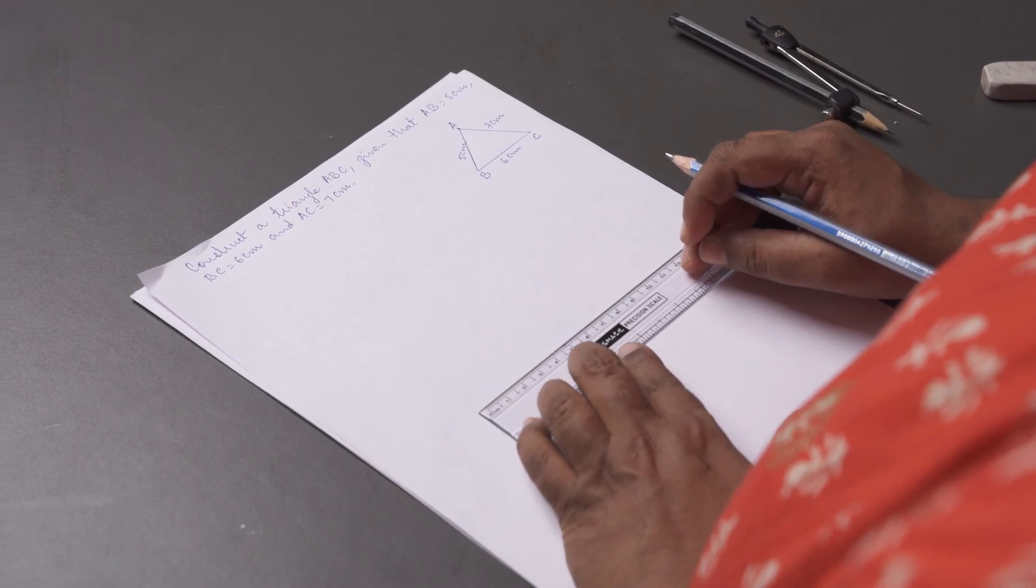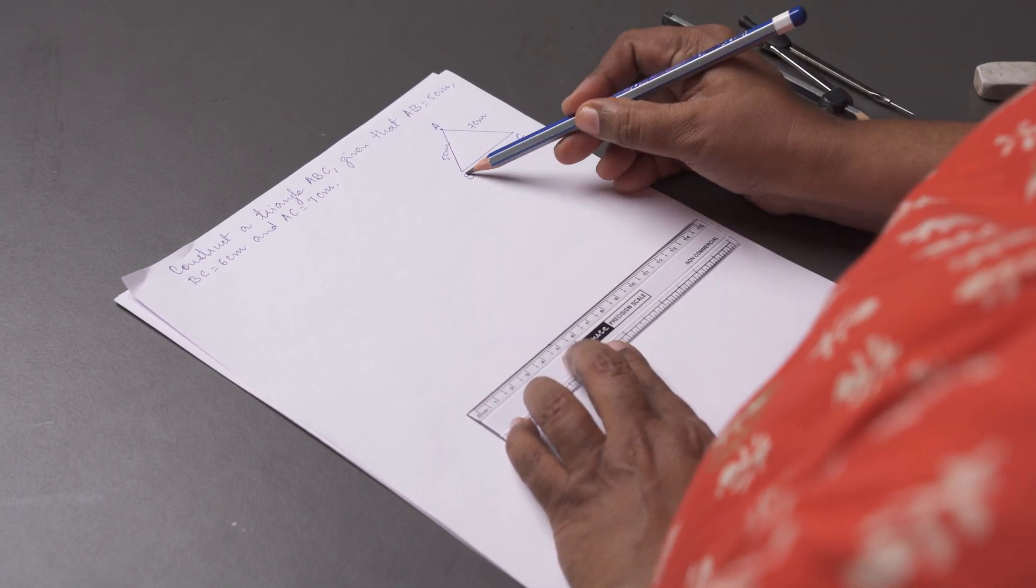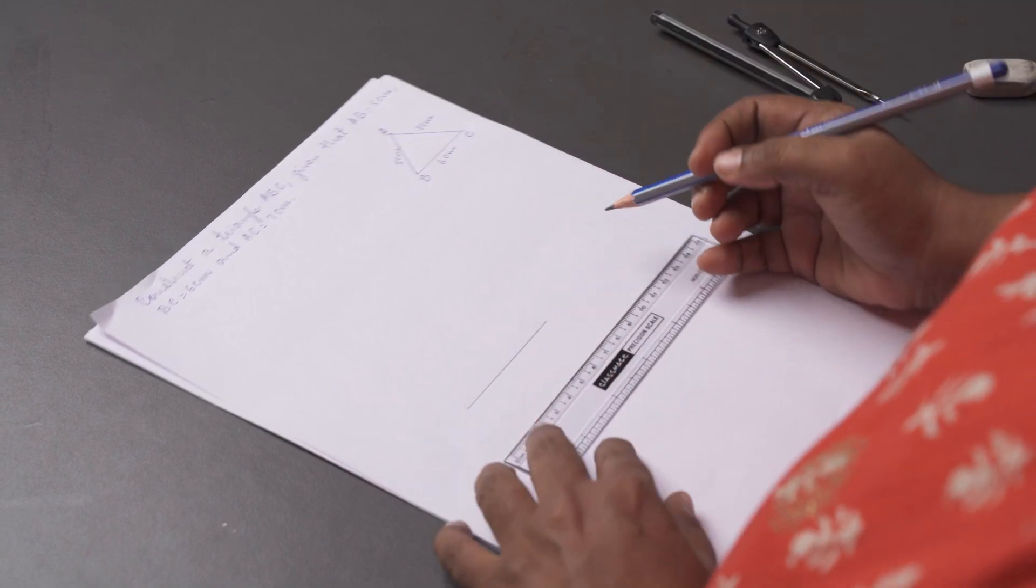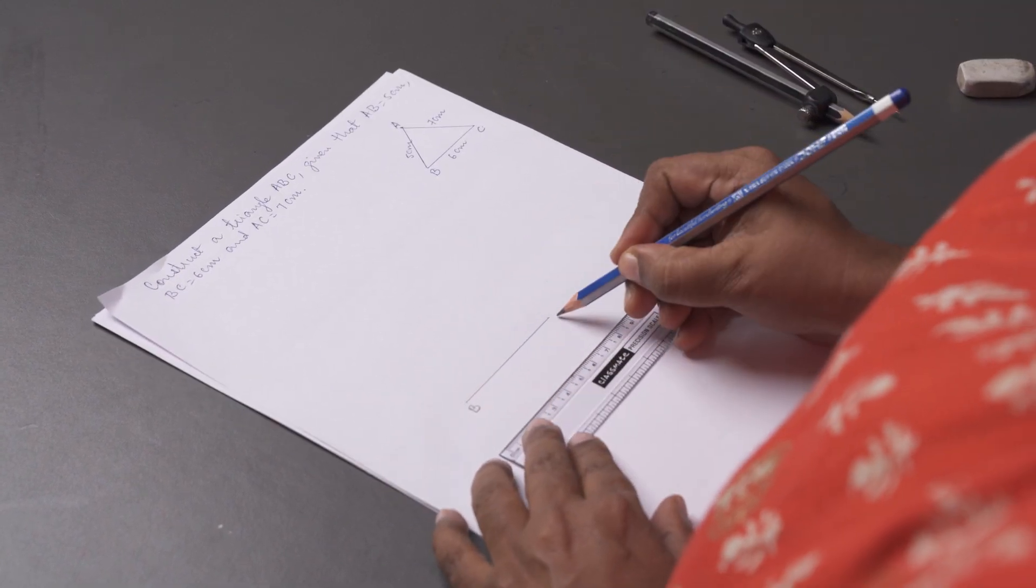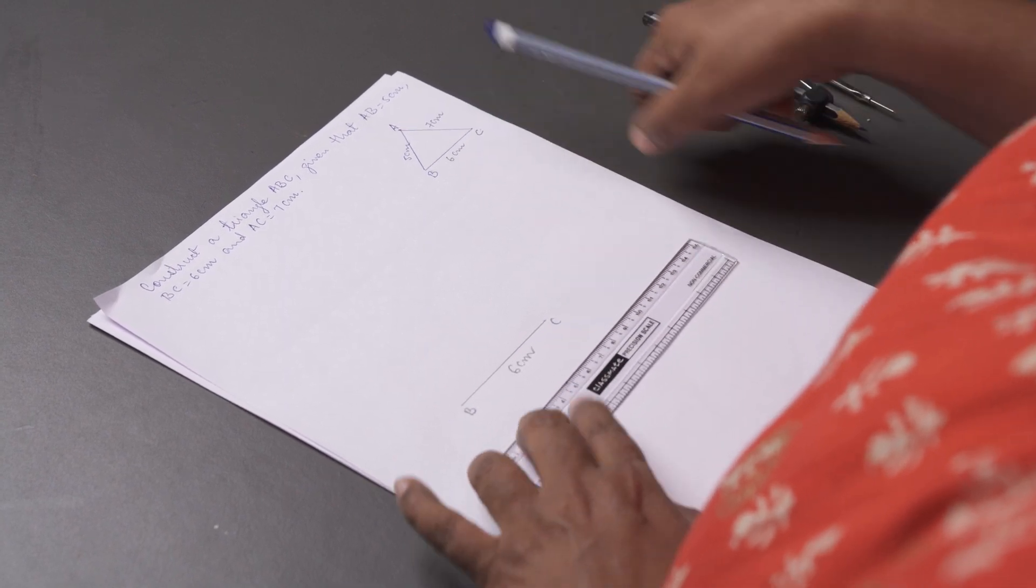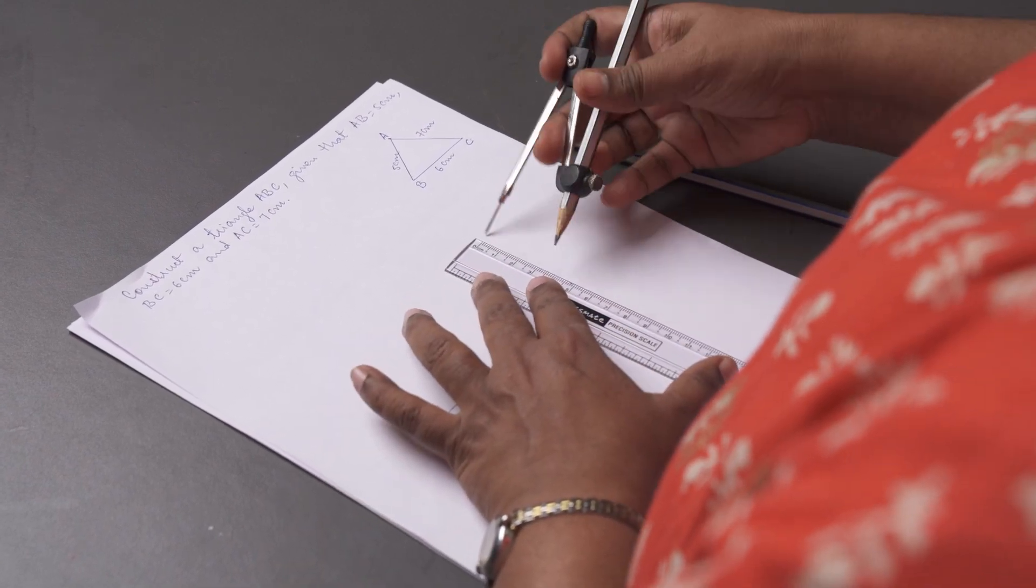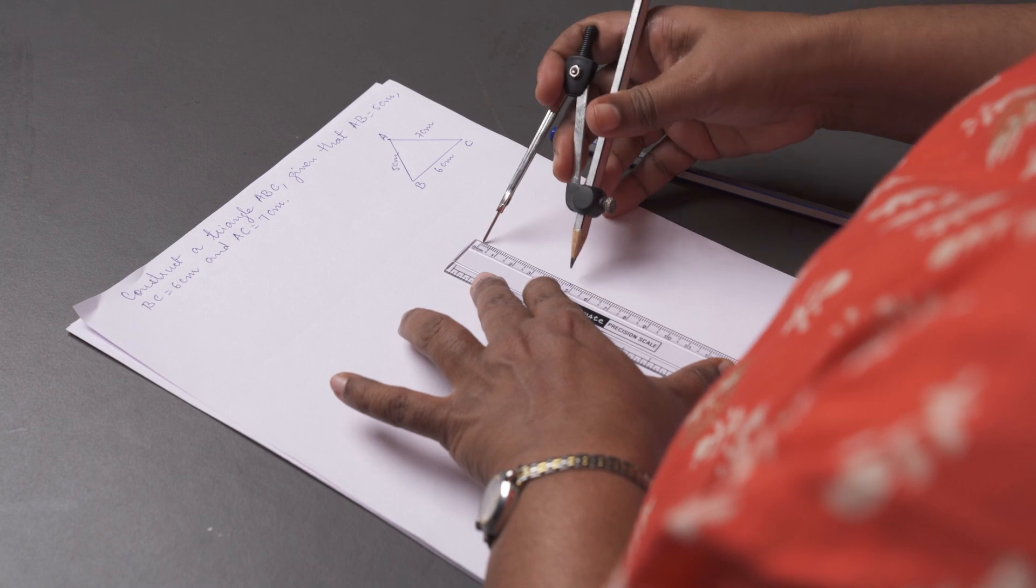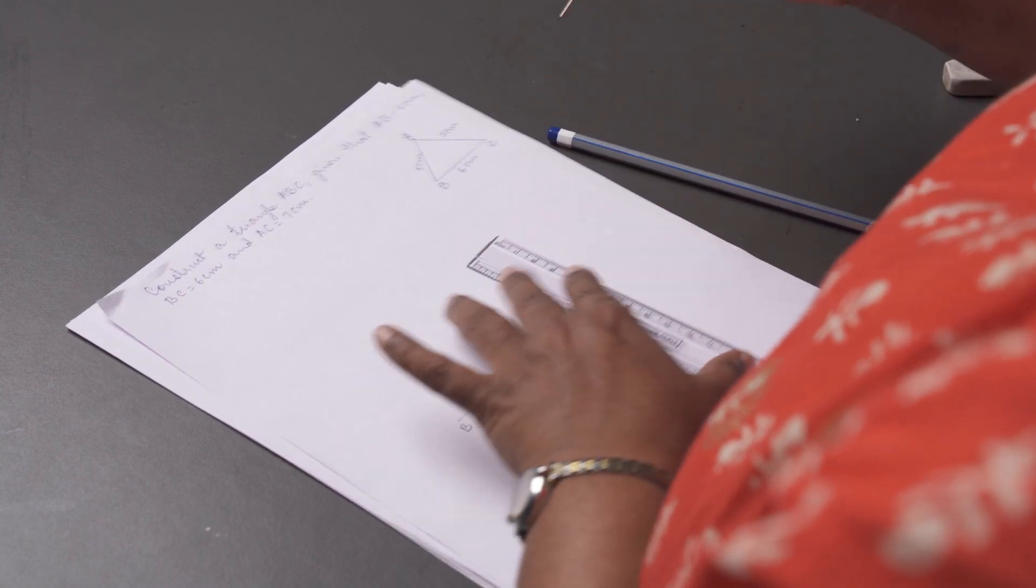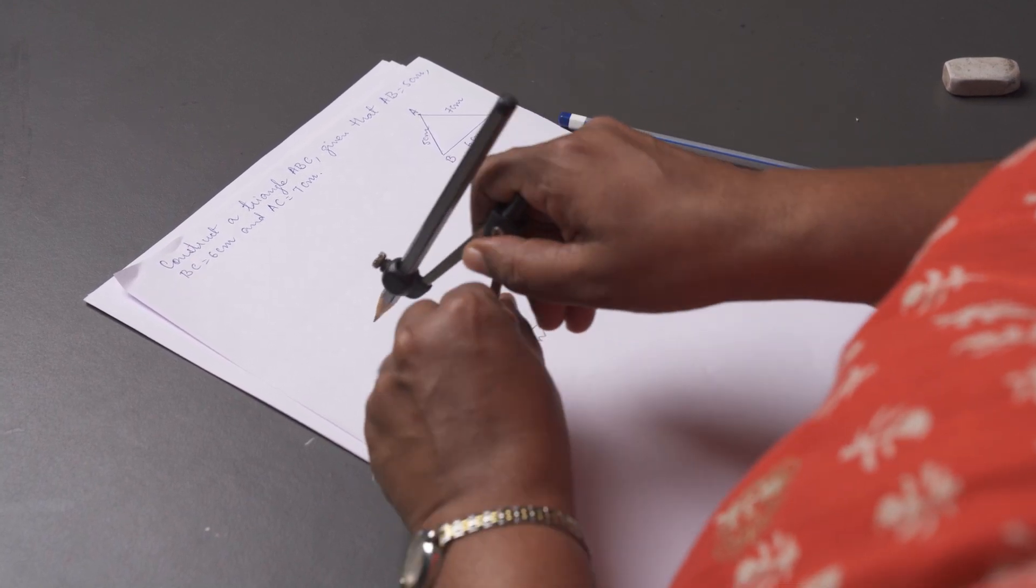Take a ruler and draw a line segment BC of length 6 cm. We need to draw AB of 5 cm. Take a pair of compasses, measure 5 cm on the ruler, place it at B, and draw an arc.